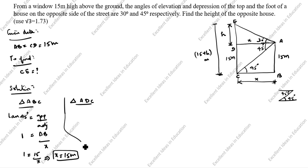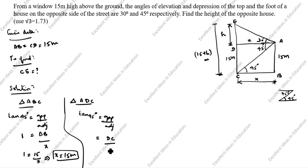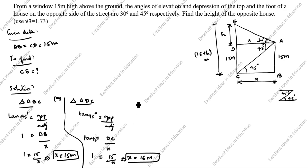The same way we solve triangle ADC. Tan 45 = DC / AD = 15 / x. Again tan 45 is 1, so x = 15 meters. Both triangles give the same value — you can use either one in your exam.